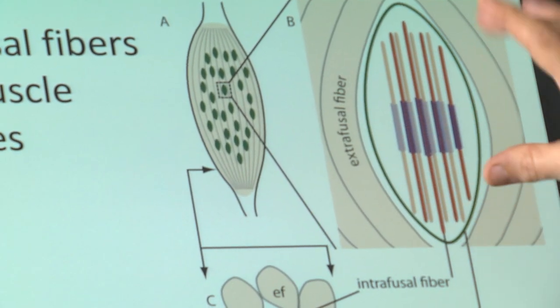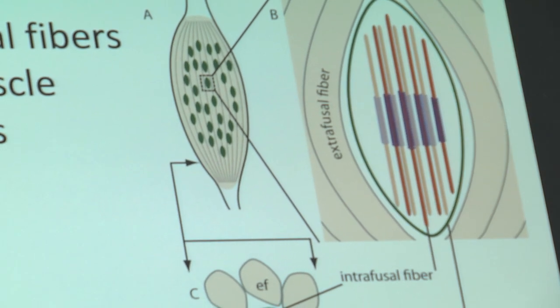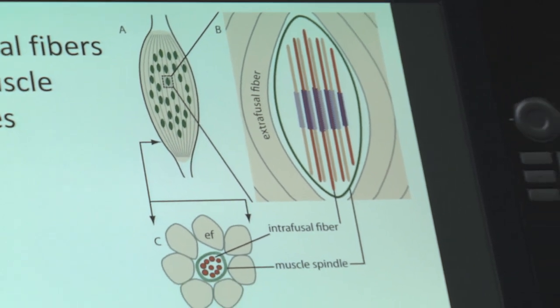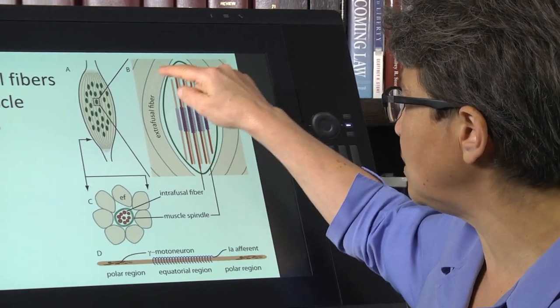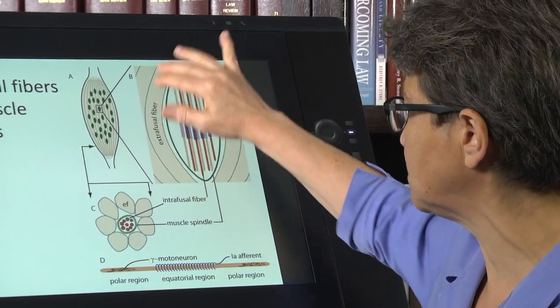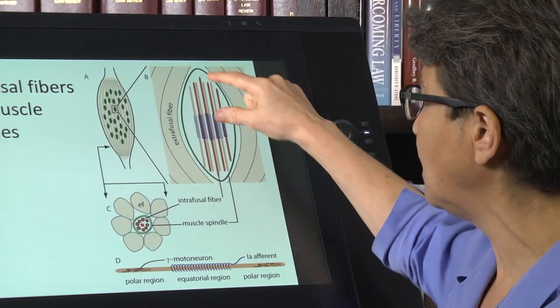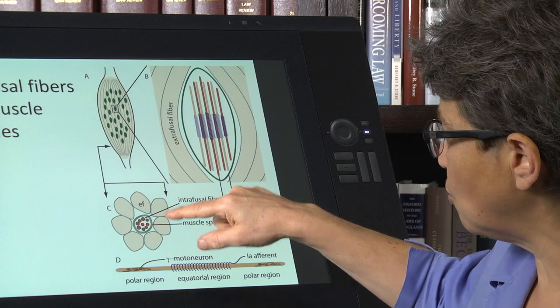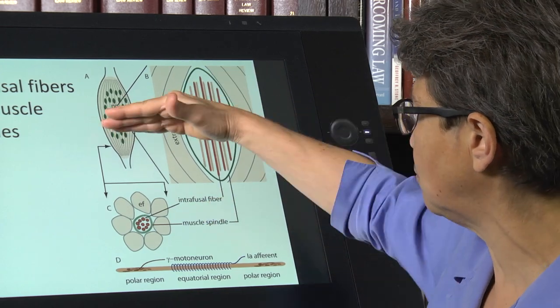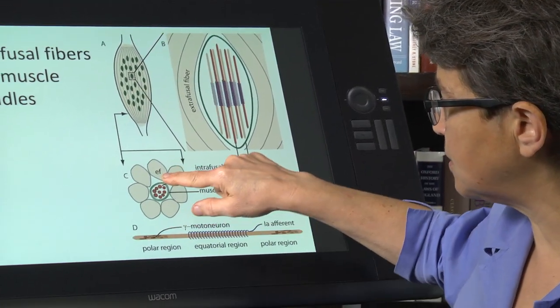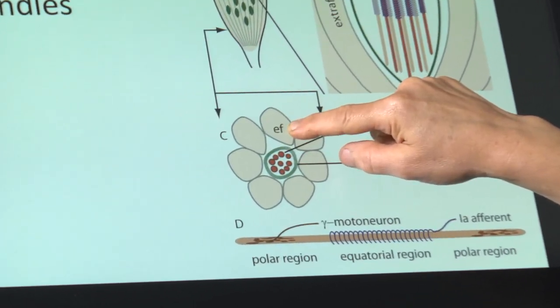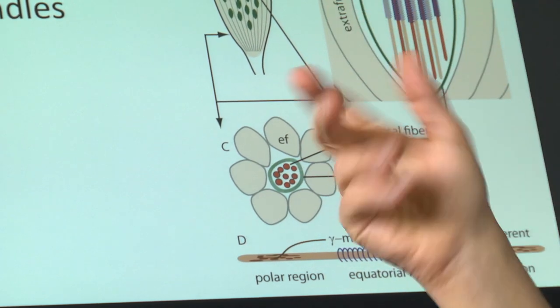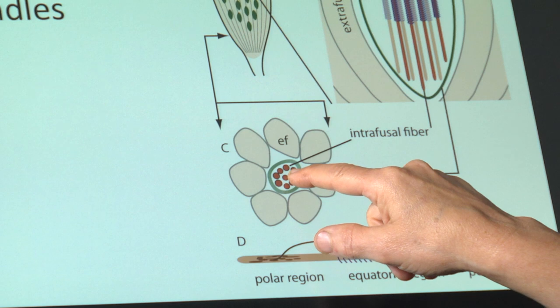Inside of these muscle spindles are a series of tiny little fibrils. They're muscle-like, but they're much, much thinner. So here is the main muscle, the part of the muscle that we think about as muscle, and within the muscle spindle are these tiny little muscle fibers. If we take a cross section through here, what we see are these big muscle fibers that we think of as muscle, and then inside of the muscle spindle, this capsule, we see these tiny little fibers.